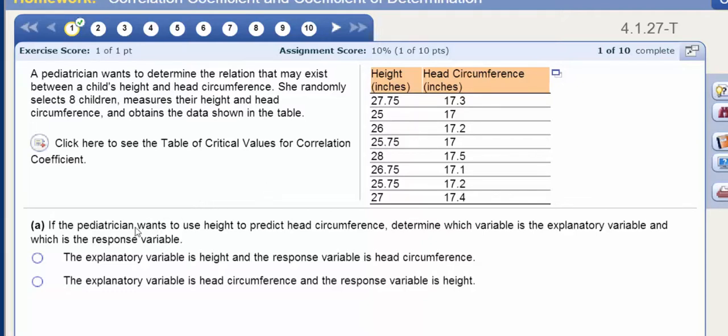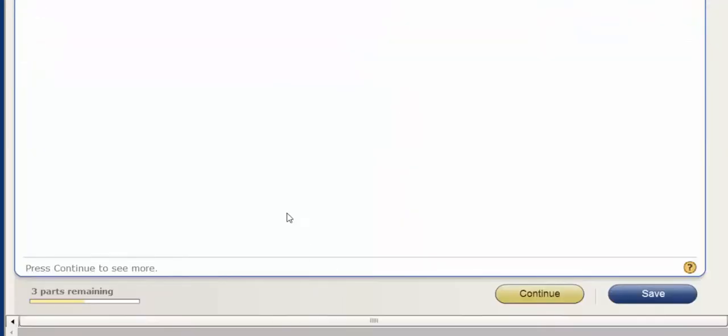So it says, which is the explanatory variable? We're investigating: does the child's height determine the head circumference? So the explanatory variable would be the height and the response variable would be the head circumference. Press enter and we got the check mark.